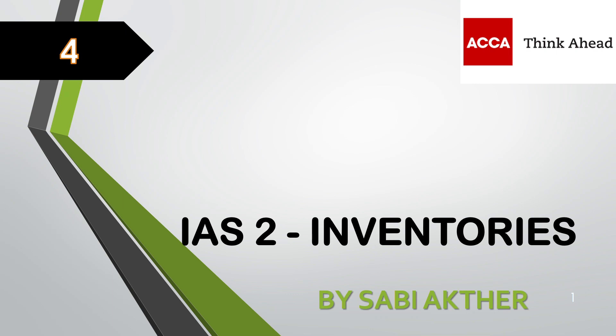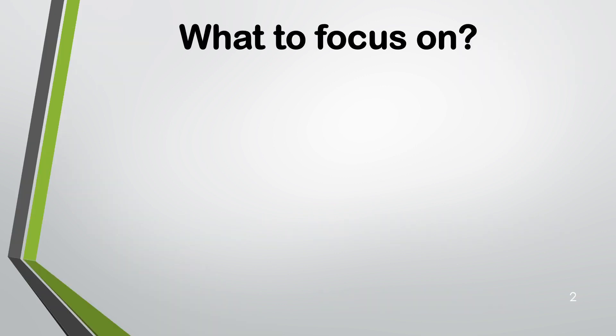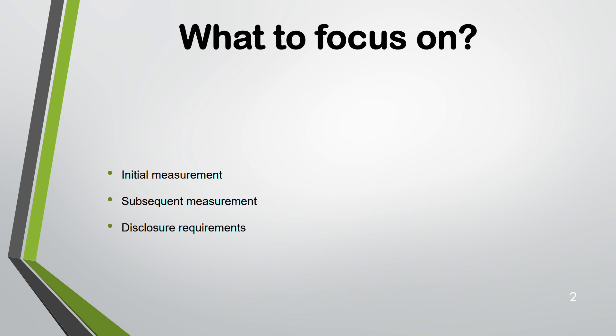Assalamu alaikum friends, welcome to Lecture 4 for SBR. Today we are going to discuss IAS 2 Inventories. We are going to go through three areas: initial measurement, subsequent measurement, and disclosure requirements. Most of the standards you will see will focus on those two areas — how do you initially measure and how do you subsequently measure.